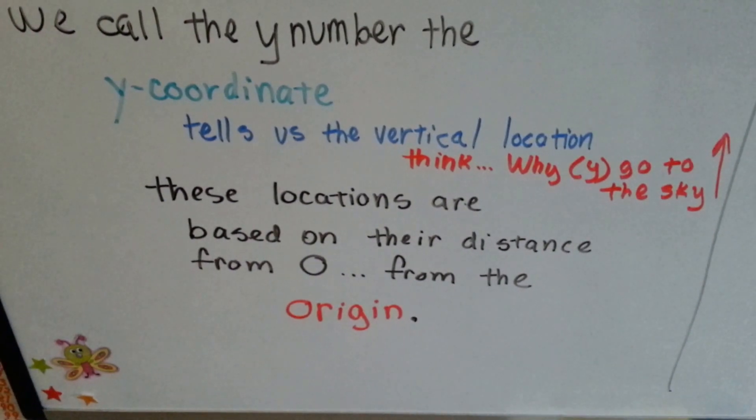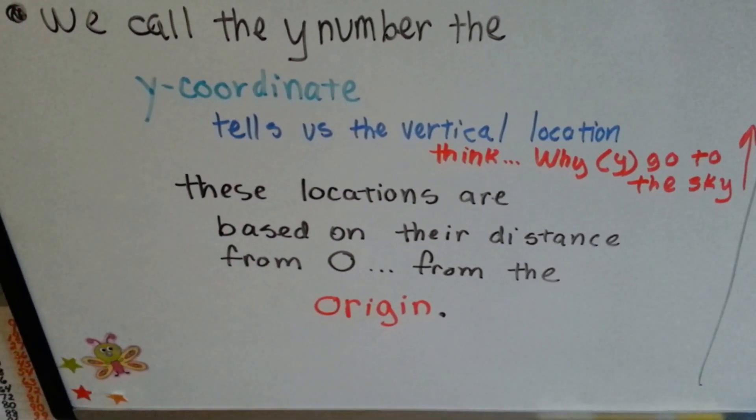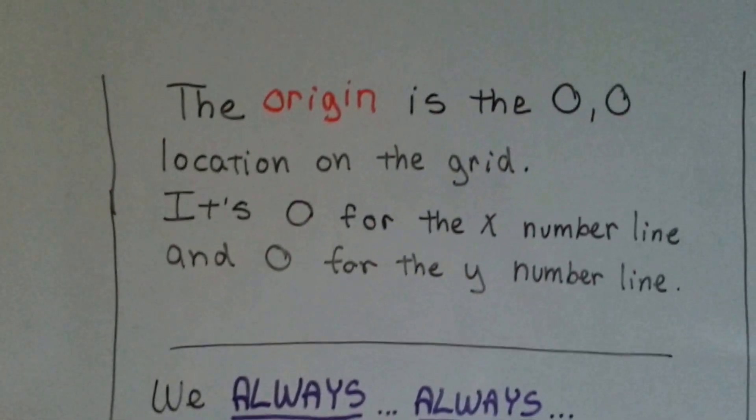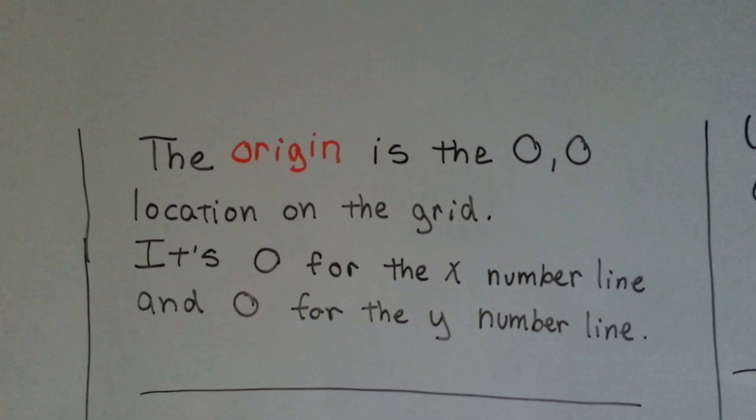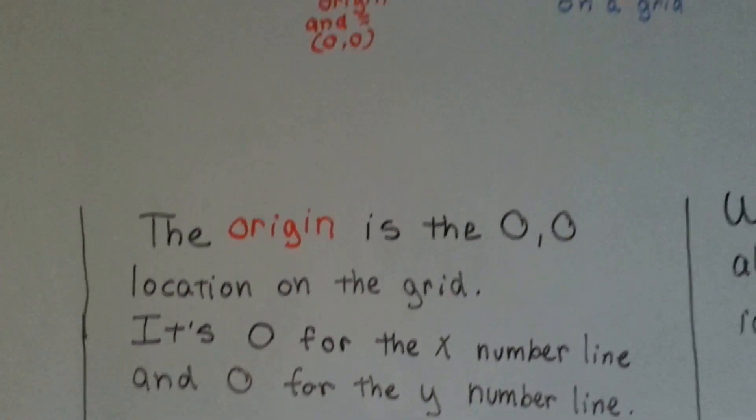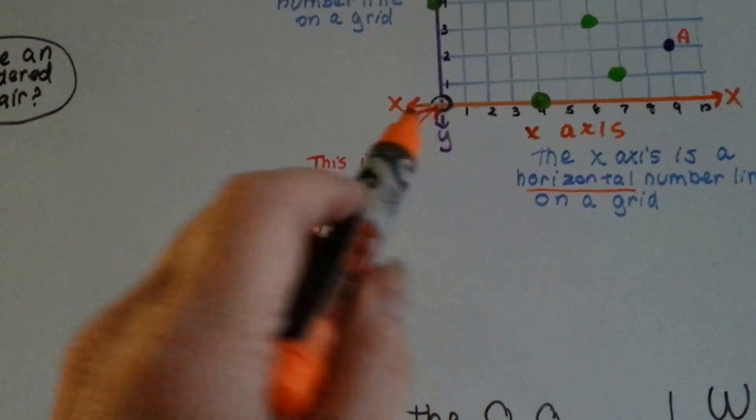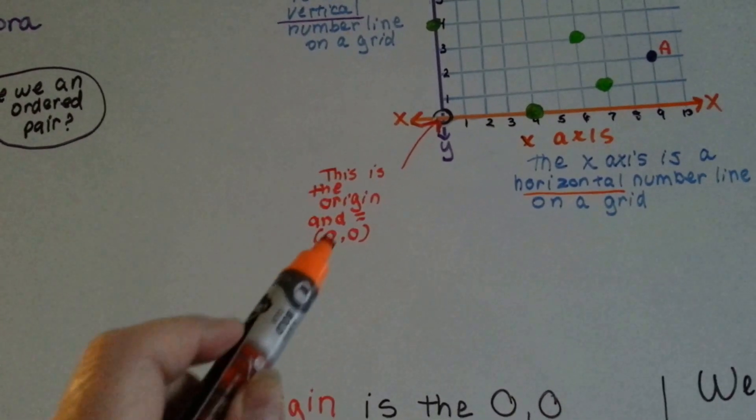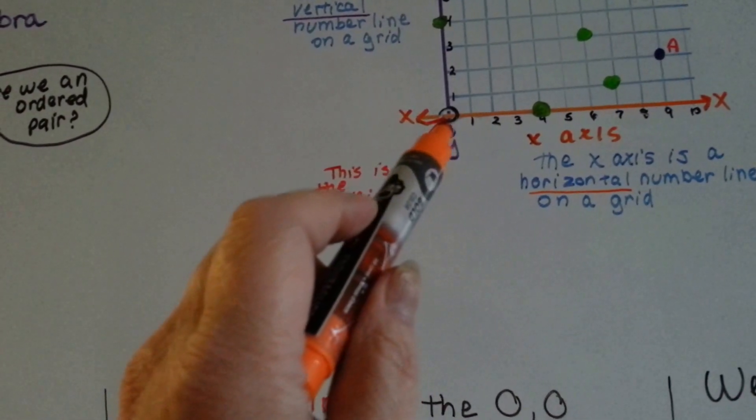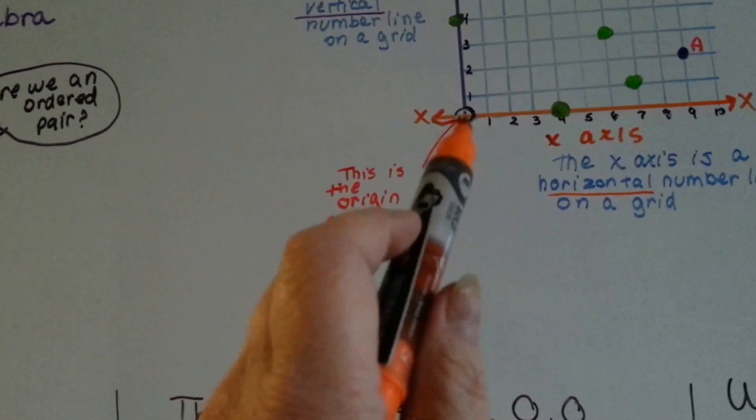These locations are based on their distance from zero. That's called the origin. The origin is the zero, zero location on the grid. It's zero for the x number line and zero for the y number line. The numbers go three, two, one, zero, and then for y it goes three, two, one, zero. So this is the origin, this corner right here, zero, zero in parentheses.